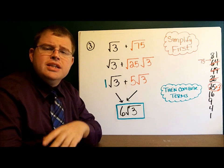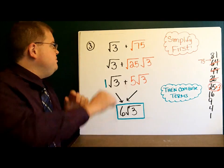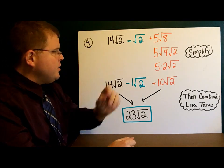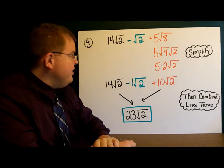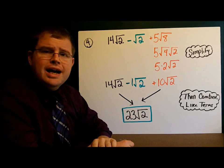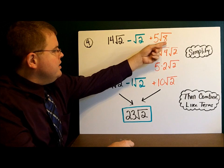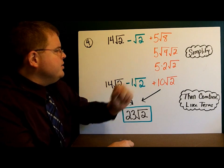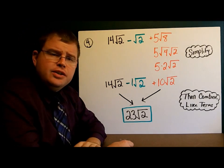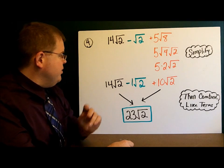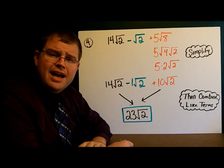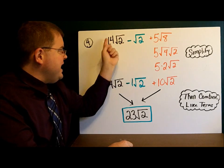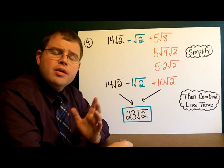So 1 square root of 3 plus 5 square roots of 3 gives me 6 square roots of 3. That's how you add square roots: simplify the radicals and then combine like terms. Example 4 is a little neater — it has 3 square roots: 14 square roots of 2, minus 1 square root of 2, plus 5 square roots of 8. The square root of 8 simplifies to 4 and 2; the square root of 4 is 2, so I have 10 square roots of 2. Now I have 14 square roots of 2 minus 1 square root of 2 plus 10 square roots of 2. 14 minus 1 is 13, plus 10 is 23 — so I have 23 square roots of 2. Remember, you can always check your work by plugging this into a calculator; if they come out the same, you're in good shape.